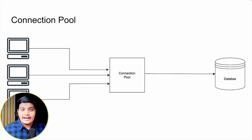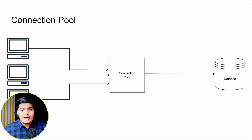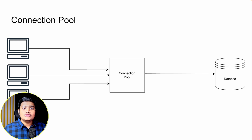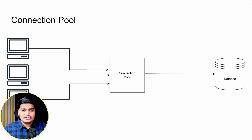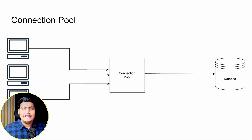The next technique is connection pooling. Whenever we fetch data from the database, we open a connection, get the data, and close the connection. If there are multiple clients, all opening separate connections creates a lot of overhead. Instead, we can create a pool of open connections. The client gets a request and uses the existing connection pool to fetch the data. In one request, rather than opening five or six separate connections, we open one connection, execute all those queries, and close it.